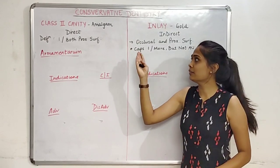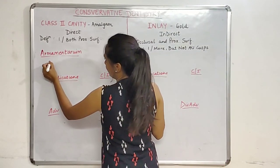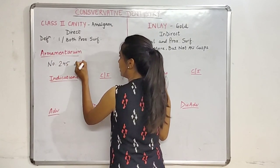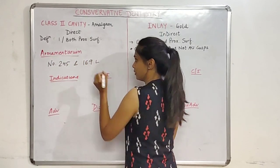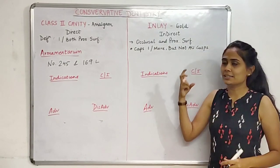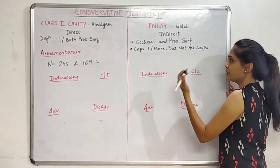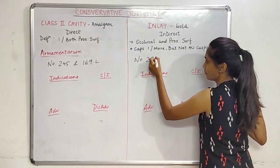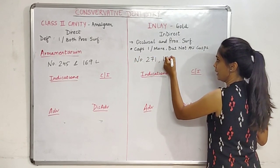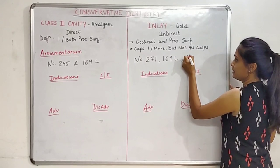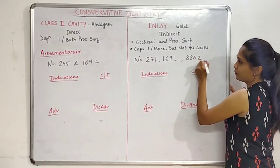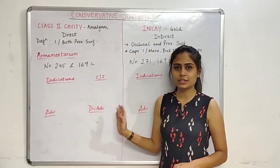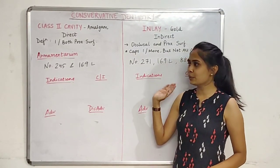Moving on to the armamentarium: to make our Class 2 cavity for amalgam we use bur numbers 245 and 169L. For the inlay cavity, as it is a more complex preparation, we use three burs — numbers 271, 169L, and 8862.